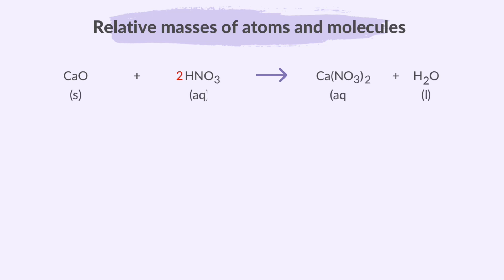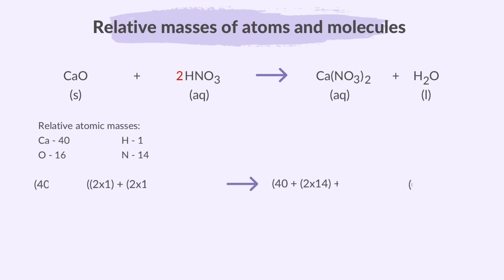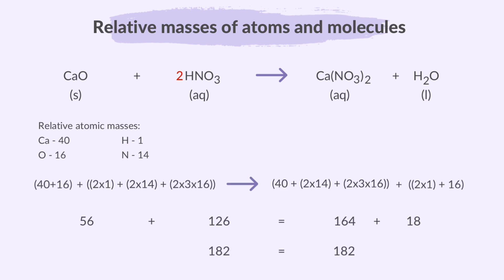Let's do another example. First, write the balanced equation and the relative atomic mass of each element. Add up all the total relative masses of the reactants first and then of the products, making sure to multiply each of them by their respective coefficients. What I want to highlight in this example is the nitrate inside the brackets. There are two nitrogen atoms in NO₃ twice, but there are six oxygen atoms, because there are three oxygen atoms and you multiply by the two that is outside the brackets.